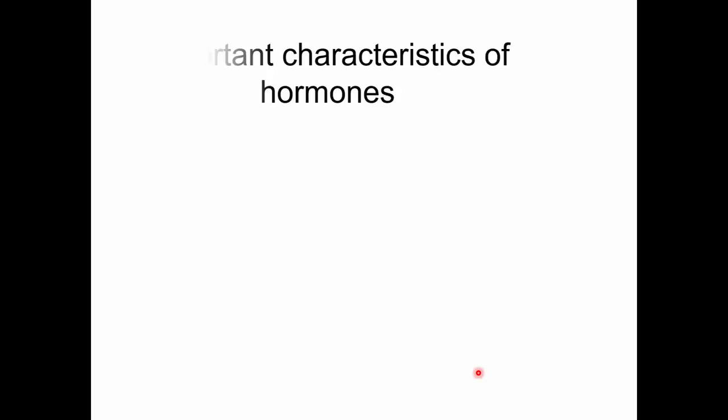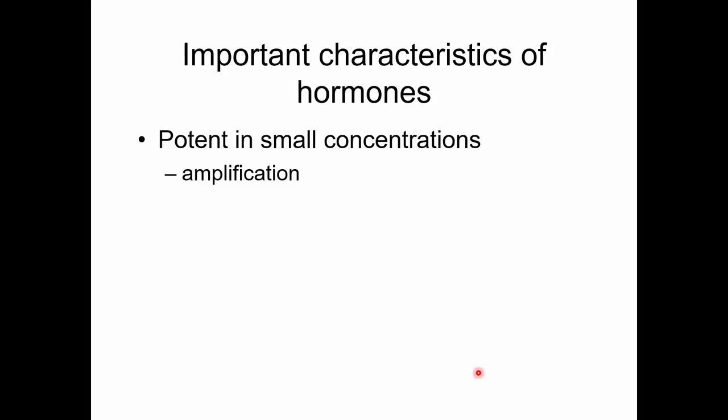What do hormones have in common? First of all, they're very potent. You only need a small amount of hormone to have a significant effect because they engage in something called amplification. When the hormone binds to its receptor, many, many processes are set off inside the cell. One step leads to the production of 10 substrates, and those 10 substrates go off and do something else to 10 other molecules, creating a growing response inside the cell.